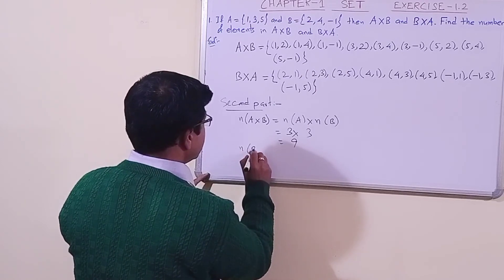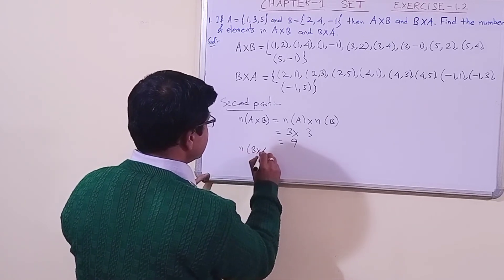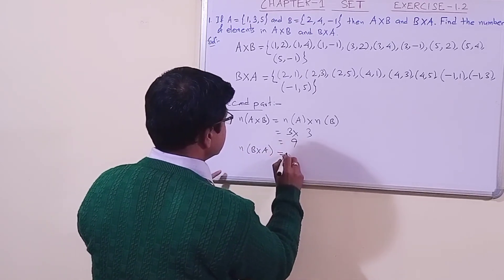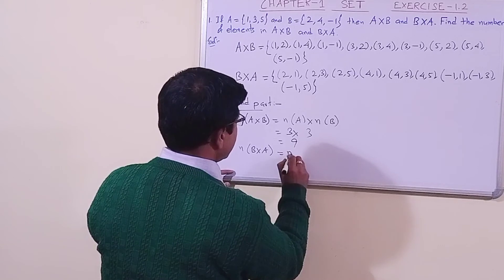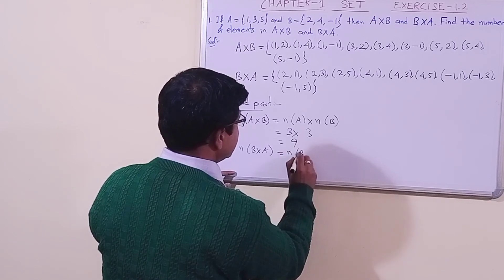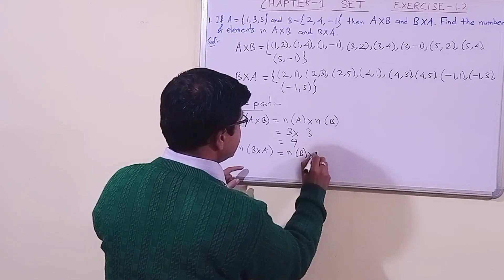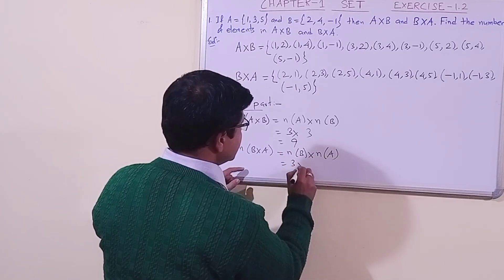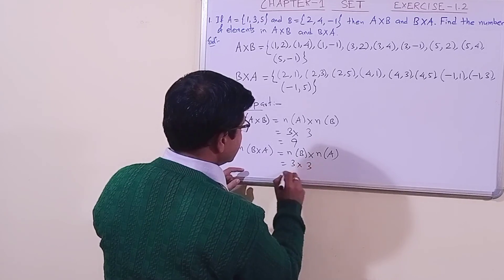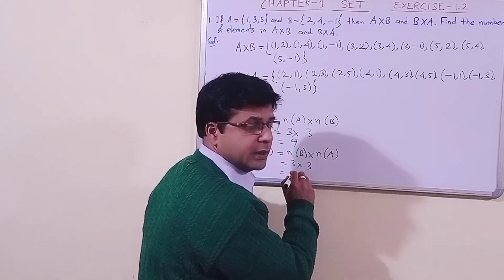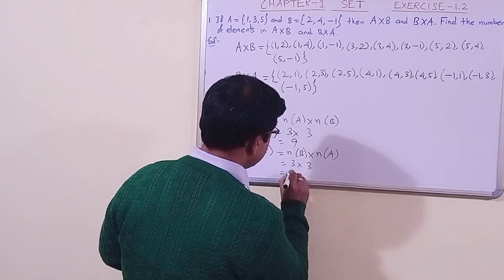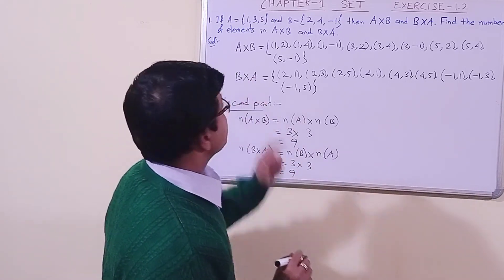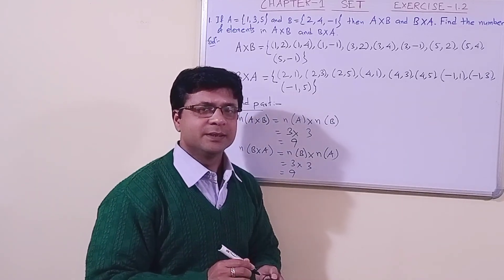Similarly, n(B cross A) = n(B) × n(A) = 3 × 3 = 9. So in this way we have solved the first question.